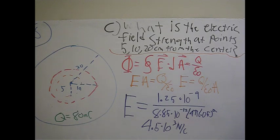And then that area of the sphere, which is 4π r². And I've already plugged in for the 5 centimeters and solved, which gives me a value of 4.5 times 10³ newtons per coulomb.